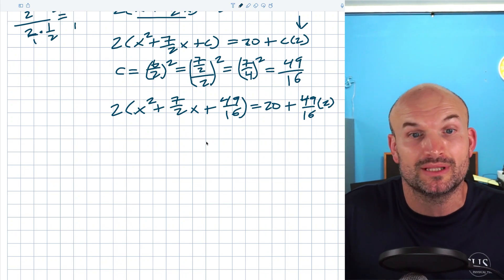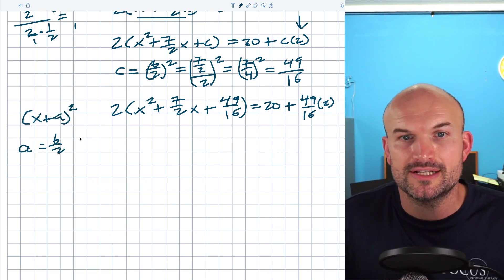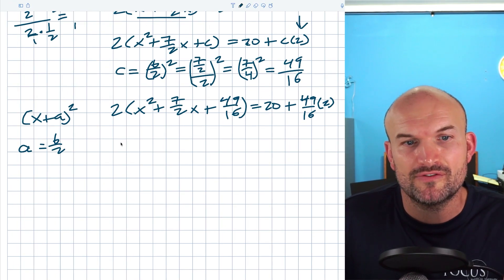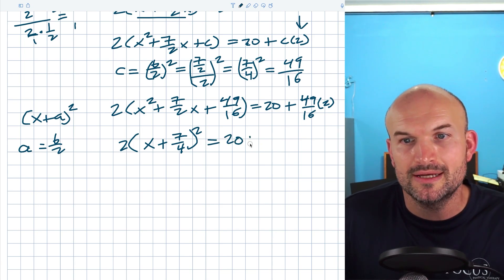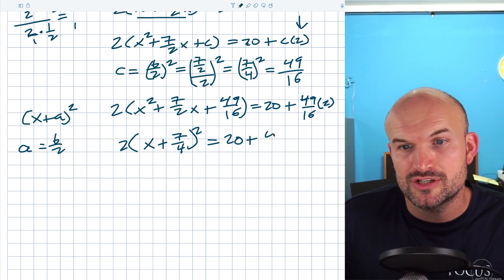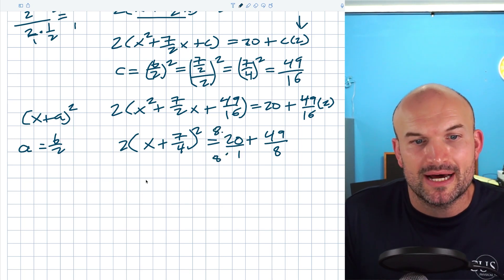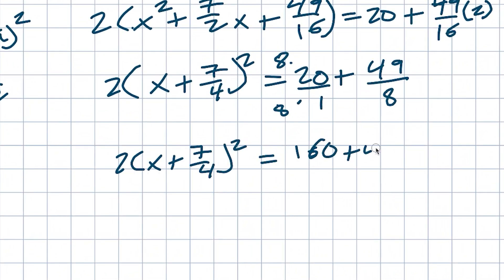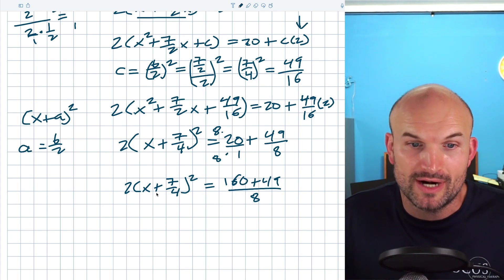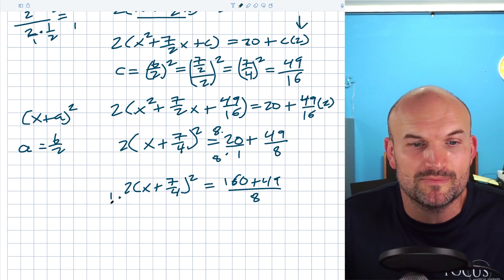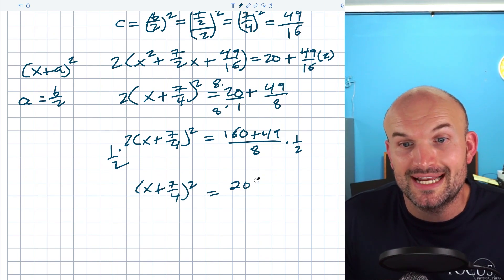Now I need the binomial form. My middle term is positive so it's (x + a)², where a = b/2 = 7/4. So I can simplify to 2(x + 7/4)² on the left. On the right: 20 + 2(49/16) = 20 + 49/8. To get a common denominator, I write 20 as 160/8, giving 160/8 + 49/8 = 209/8. Then I divide both sides by 2, giving (x + 7/4)² = 209/16.